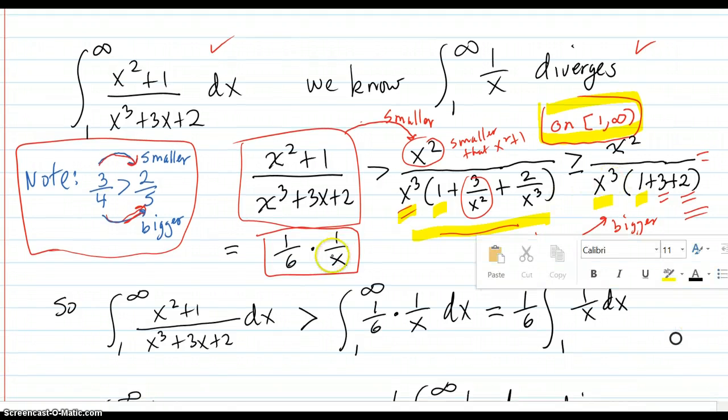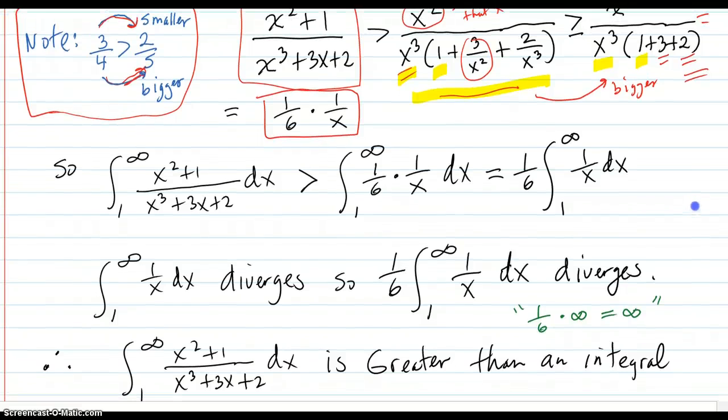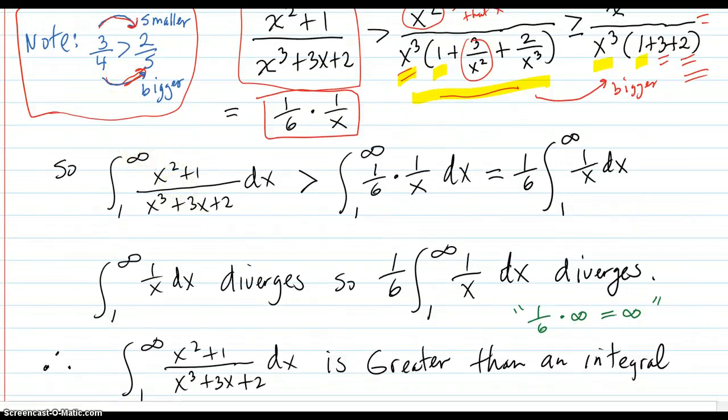Because x² over x³ is 1/x. So now we have our original integral, which is right here, is greater than, because there was a greater than in the chain right there, than this 1/6, 1/x, 1 to infinity, dx integral.